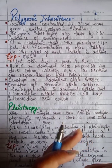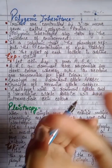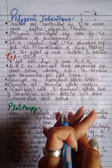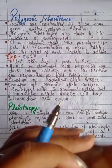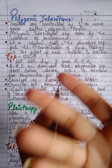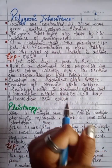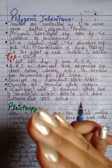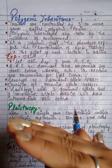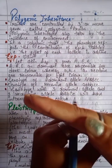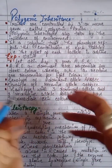Polygenic inheritance: traits are controlled by three or more genes, called polygenic traits. Polygenic inheritance is also influenced by the environment. In a polygenic trait, the phenotype reflects the contribution of each allele — that is, the effect of each allele is additive.